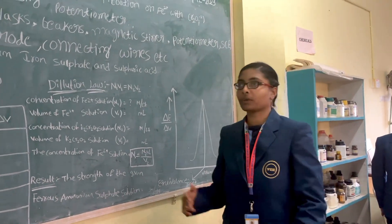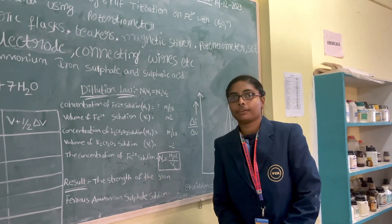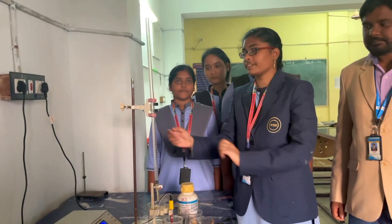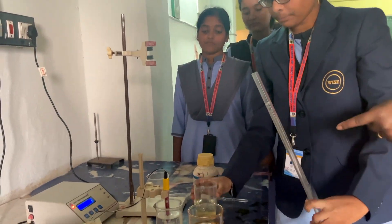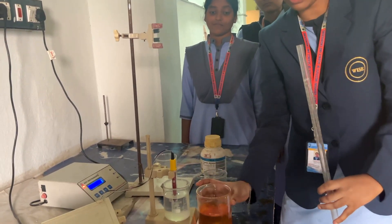This is the procedure of this experiment. Let's meet in the experiment. First of all, we have to take the burette and fill it with potassium dichromate.